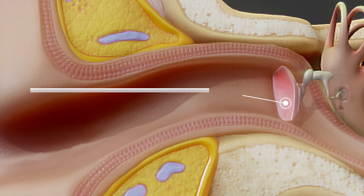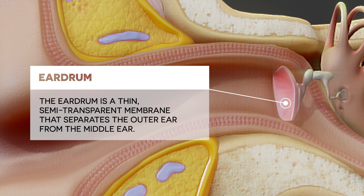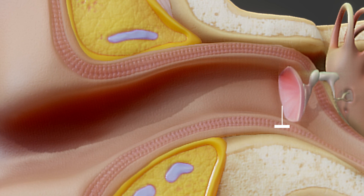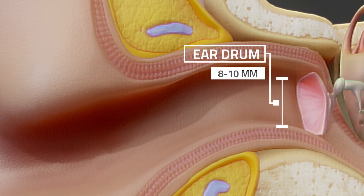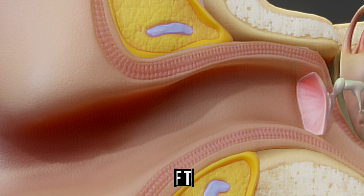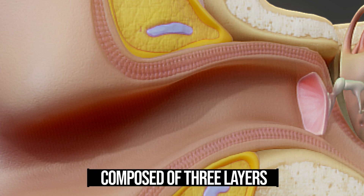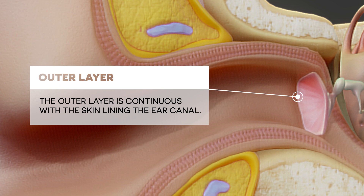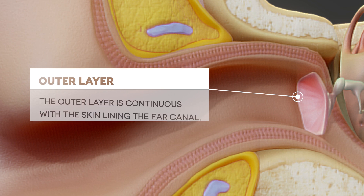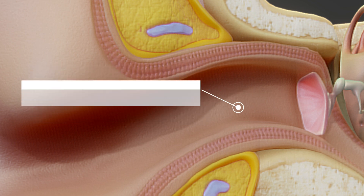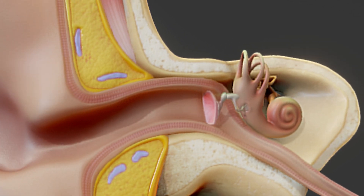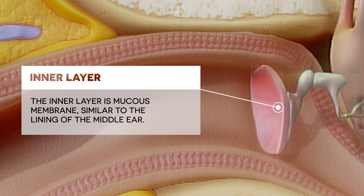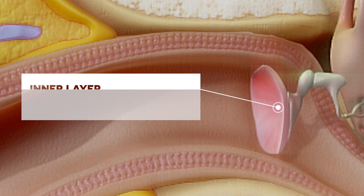The eardrum is a thin, semi-transparent membrane that separates the outer ear from the middle ear. It is roughly oval in shape and measures about 8 to 10 millimeters in diameter in adults. The membrane is composed of three layers: an outer layer continuous with the skin lining the ear canal, a middle fibrous layer that gives the eardrum its strength and ability to vibrate, and an inner mucous membrane layer similar to the lining of the middle ear.